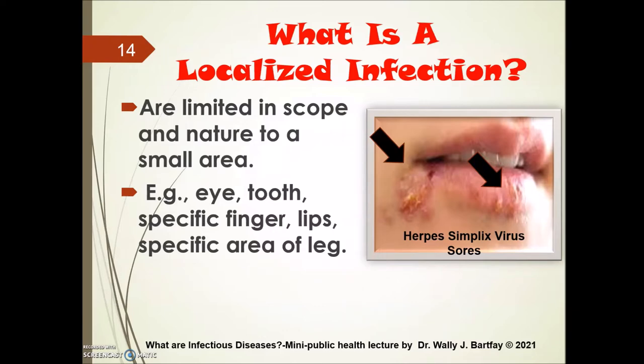Localized infections are limited in scope to a small area — for example, localized to your eye such as conjunctivitis, a tooth infection, a specific finger, your lips, or a specific area of your leg. Here you see a photo of herpes simplex virus sores, also known as cold sores — this would be a localized infection limited to the lip and mouth area.